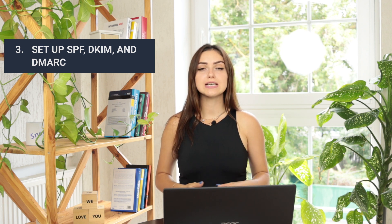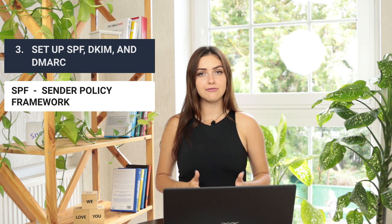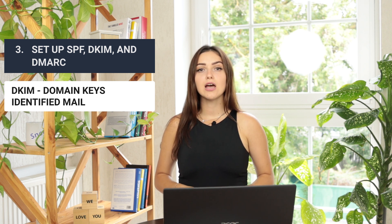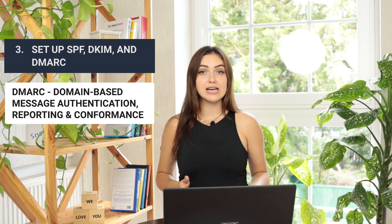Set up SPF, DKIM, and DMARC. These are three protection steps that save you from hackers, phishers, and data capture, and help avoid the recipient's spam folder. Sender Policy Framework (SPF) is a special DNS record that contains all IP addresses that you can send emails from for your domain. Domain Keys Identified Mail (DKIM) is an authentication mechanism that uses encryption keys to prove that you are the sender — if you don't set up DKIM, many mail servers will simply decline your emails. Domain-based Message Authentication, Reporting, and Conformance (DMARC) is a protocol that defines what to do if your email hasn't passed the first two authentication steps, SPF and DKIM.